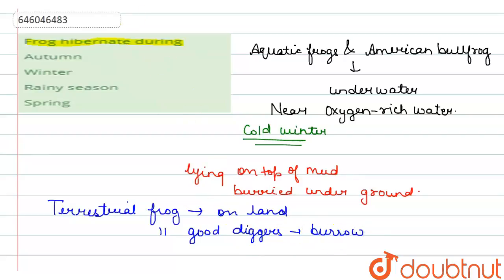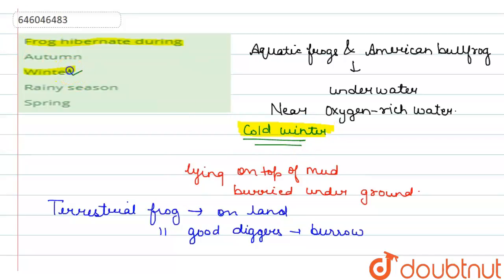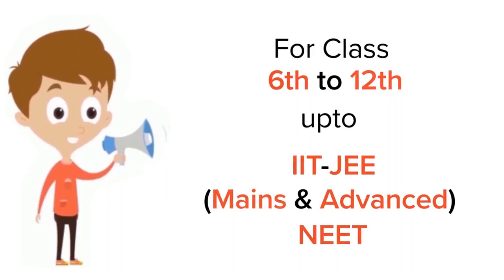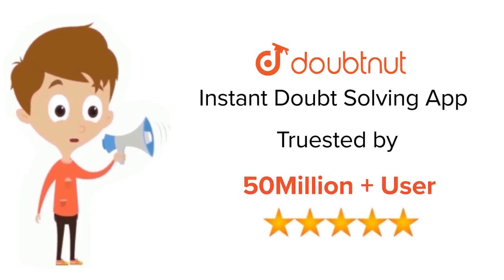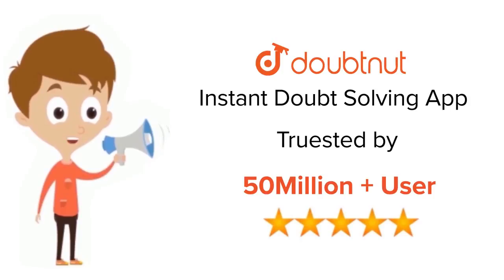From the given options, option number two is correct — frogs hibernate in the cold winter, as it is their common response to the season. Option number two is the correct answer. For class 6-12, IIT JEE, and NEET level, trusted by more than 5 crore students — download the DoubtNut app today.